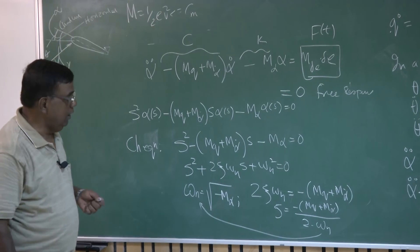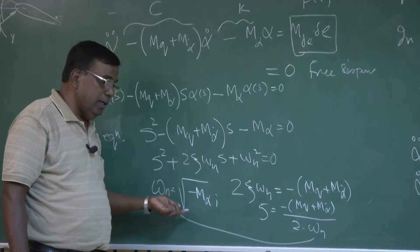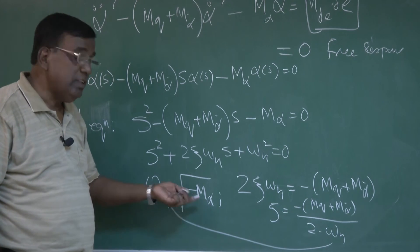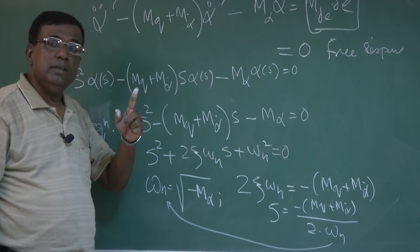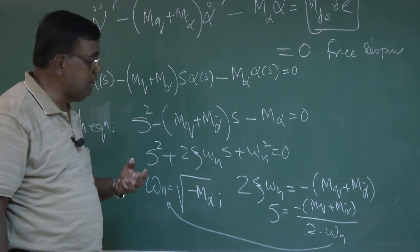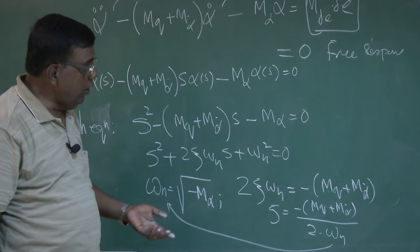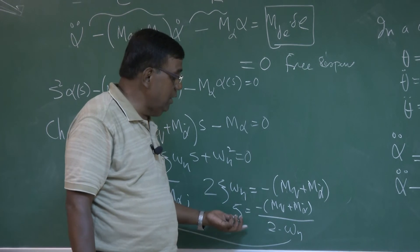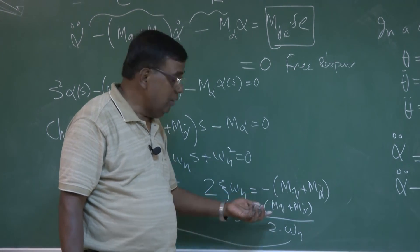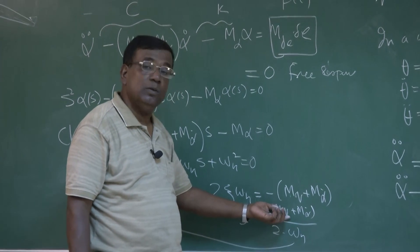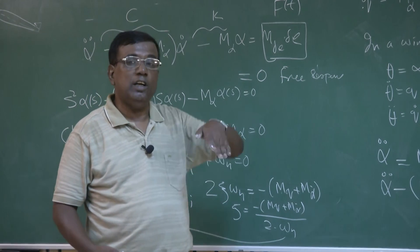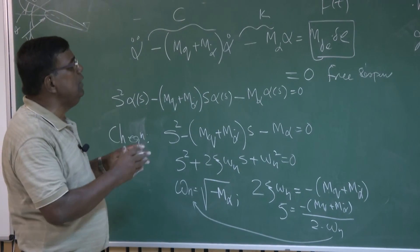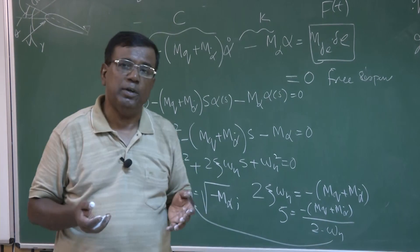Apart from the mathematical skill, we also realize that when we write minus M_alpha under the square root, this becomes a real number only when M_alpha is negative — meaning this analysis is valid only for a statically stable airplane. Furthermore, zeta primarily depends on the damping derivative M_q, just as in a mass-spring-damper system zeta depends on the damping constant C. Here M_q is the damping-equivalent, representing moment due to pitch rate. You will use this understanding when analyzing the dynamic stability of an airplane. Thank you very much.